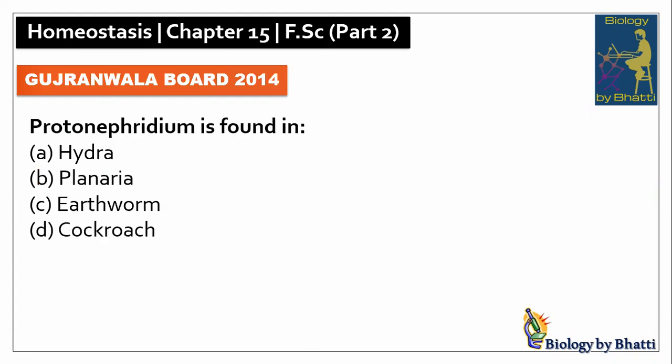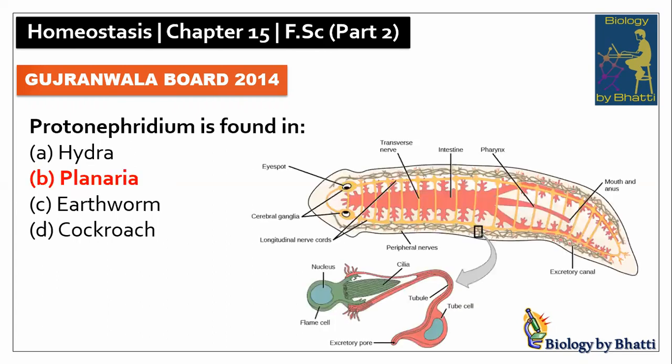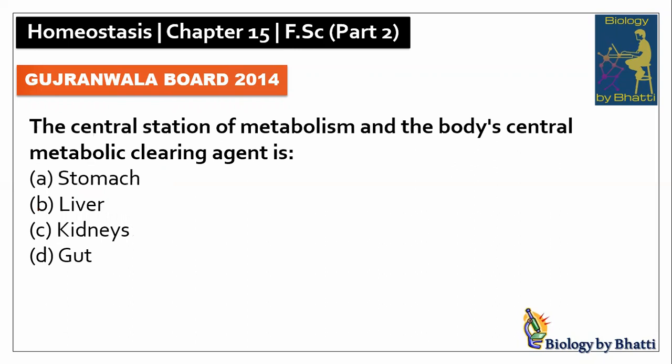Gujranwala Board 2014: protonephridium is found in planaria, the answer was B option. In this paper, the central station of metabolism and the body's central metabolic clearing agent is the liver, so the answer was B option.